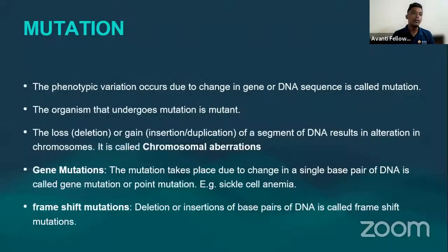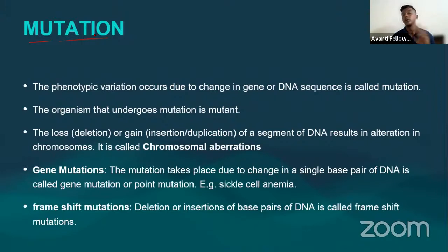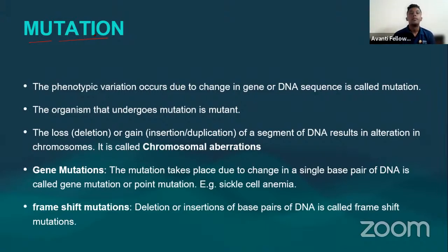Mutation is another important aspect of inheritance and variation. Mutation can have a bad face — as seen in Hiroshima, Nagasaki, radioactivity hazards, UV radiation, and the Chernobyl disaster — where mutations lead to cancer and genetic disorders. But mutation can also have a good face, like the adaptations we think of with fictional characters.